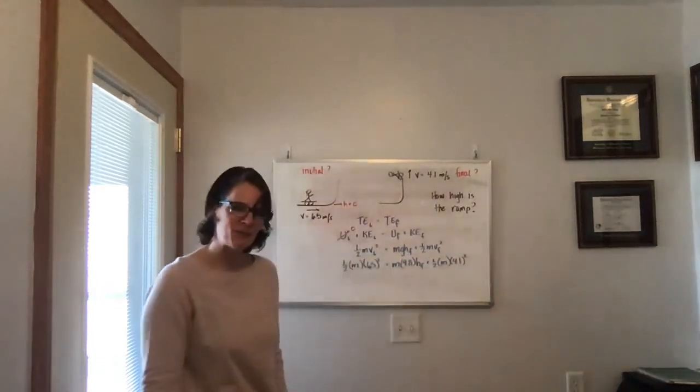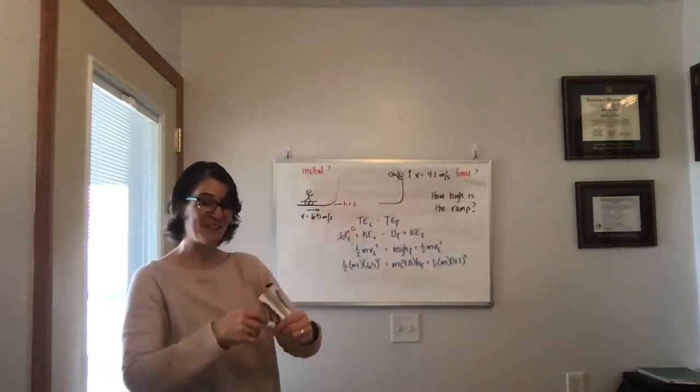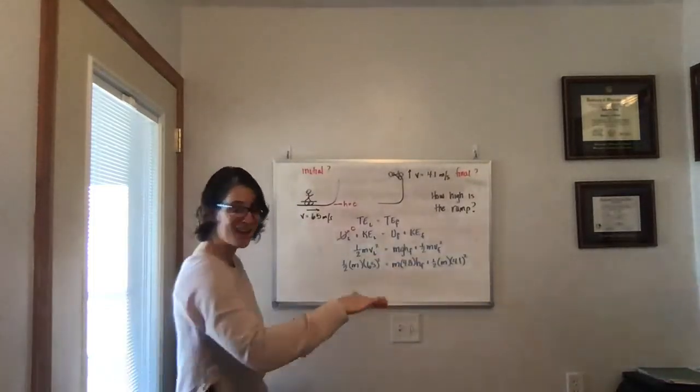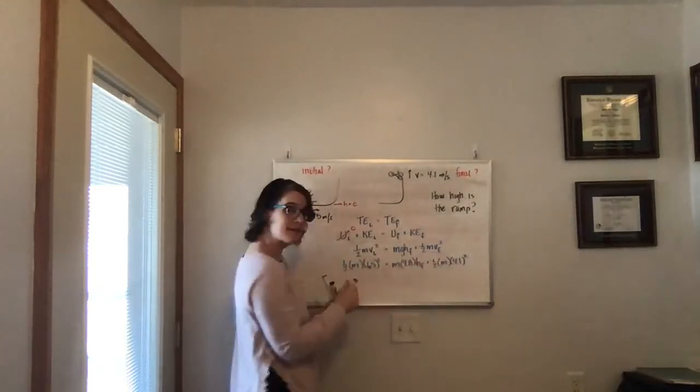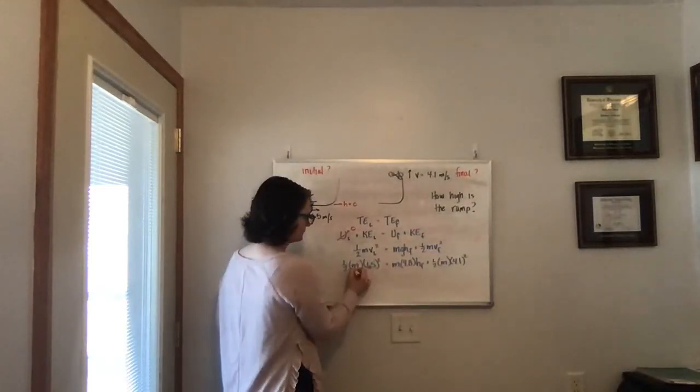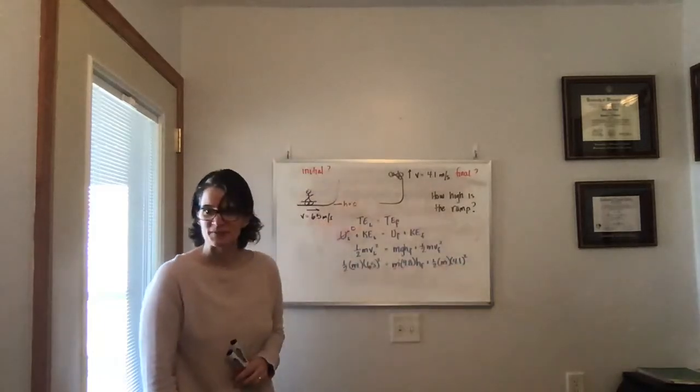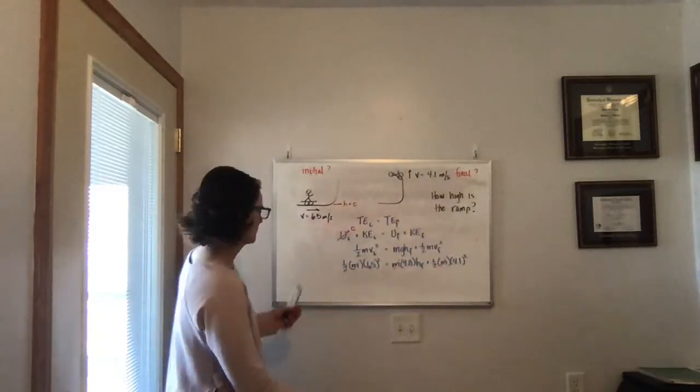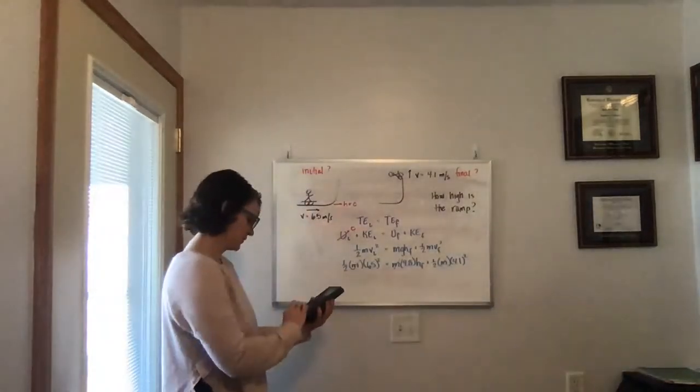And what do we notice about that mass that I wasn't given? Well, it's in every term. And when something's in every term, if I divide by that variable, it goes away. So if I divide all sides by M, the M, which is in every term, will disappear. So divide by one. So multiply by one. And we're left with one half times 6.5 squared.